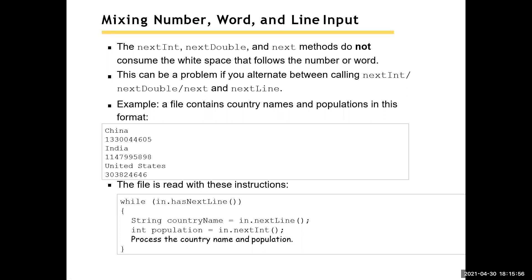Another format option: if putting everything on one line causes problems, change the format so the name is on one line and the population is on the next. If I get a whole line, that gives me the country name — one word, two words, three words, whatever — and the next line has the population. So I read it as a whole line, then read the population as an integer. That's the third way of reading this data.